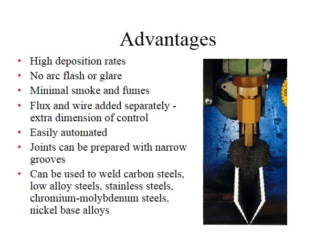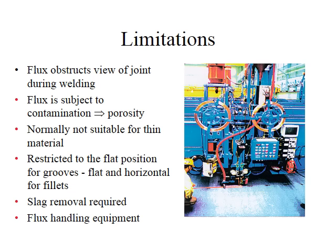Submerged arc welding is an efficient process that can be used on nearly all ferrous alloys. Very good quality welds are produced in metals thicker than 1/16th of an inch. Carbon or stainless steels up to half an inch thick are welded in one pass; thicker materials require more passes. Deposition rates, arc travel speeds, and weld completion rates are better than other processes. There is no visible arc and no weld spatter, and the deep penetrating concentrated heat allows for narrow welding grooves requiring far less filler metal. Unfused flux can be recovered and recycled.